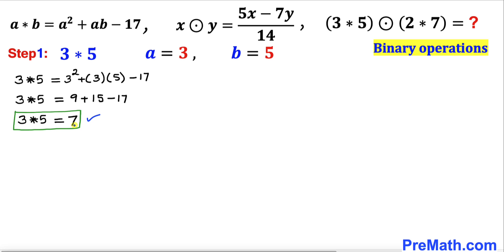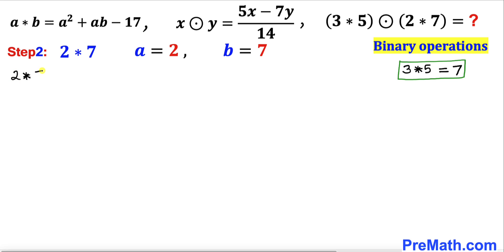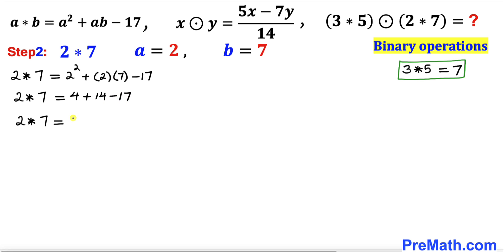So 3★5 turns out to be 7. Now for our next step, we take care of 2★7, where a = 2 and b = 7. Plugging in gives 2² + 2×7 − 17, which simplifies to 4 + 14 − 17, and the right-hand side turns out to be 1.